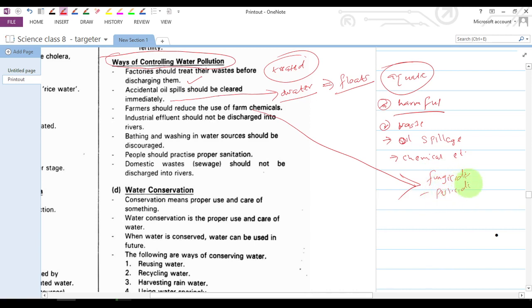Industrial effluent should not be discharged into rivers. Effluent is the waste products from the industries. They should not be thrown into rivers or any water source. They should find an alternative place where they can discharge the effluent.